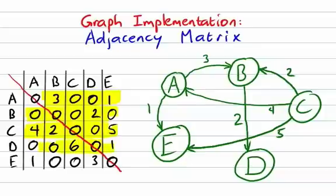There are two edges originating from D: one that goes to C with weight 6, and one that goes to E with weight 1.